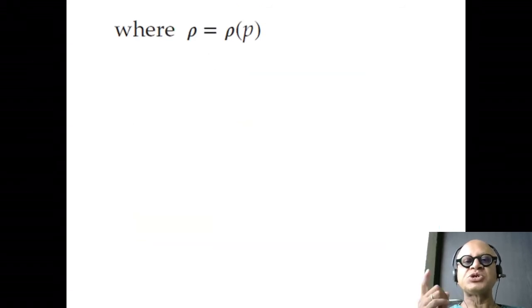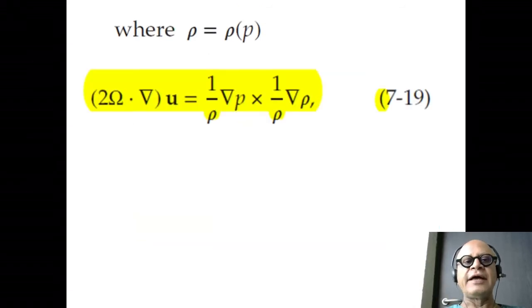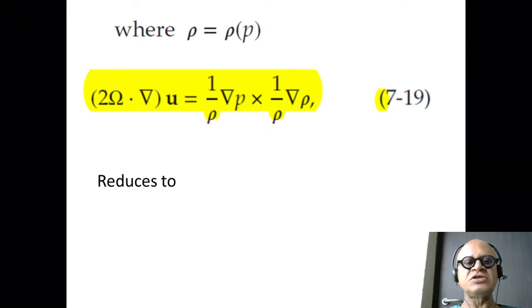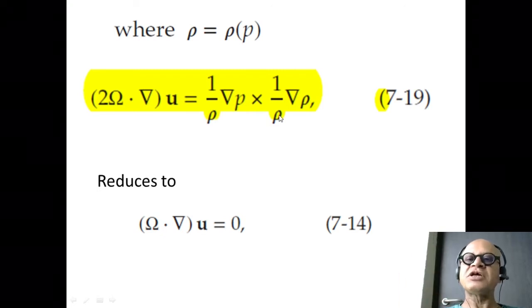And the barotropic fluid with density depending on pressure ended up with this, which we reduced to Ω·∇u = 0 when you had barotropic fluid because grad P and grad rho are parallel to each other. That's the definition of baroclinicity.